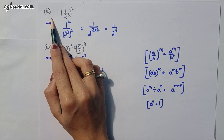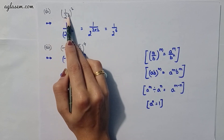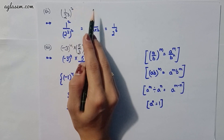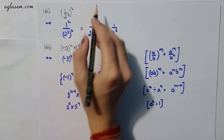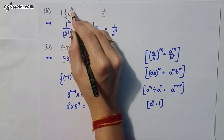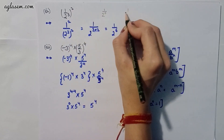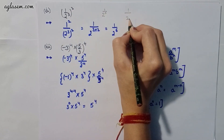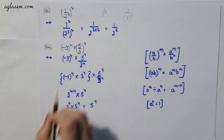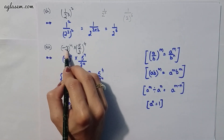The second part is (1 / 2^3) whole power 2, that is 1 / 2^(3×2) = 1 / 2^6.